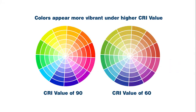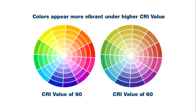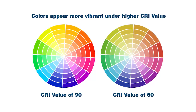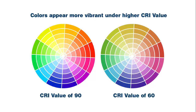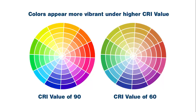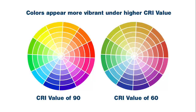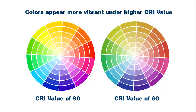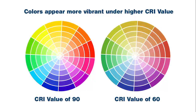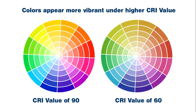The Color Rendering Index, or CRI, is a measurement of how well a lamp illuminates color. It's not a measurement of brightness, per se, but more an indication of how sharp colors will appear under its light.